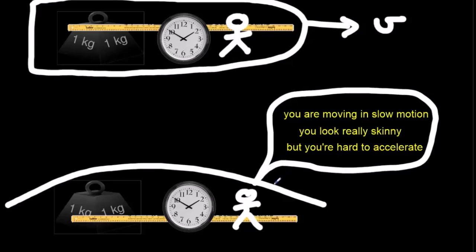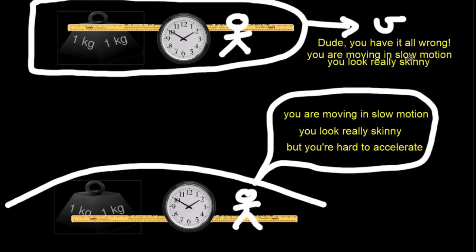But what makes this the theory of relativity is when the second twin on the rocket ship looks back to earth. Because what he's going to say is, dude, you've got it all wrong. It's you who are moving in slow motion. It's your clock that's running slow. And it's you who's too skinny. Your meter stick is too short. And you're the one that's hard to accelerate.